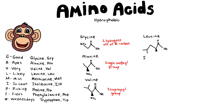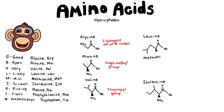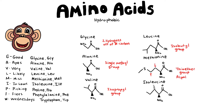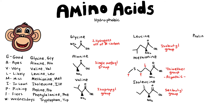Let's look now at the structures of leucine, isoleucine, and methionine. Leucine has an isobutyl group attached to it. Methionine has a thioether group attached to it, and isoleucine has a sec-butyl group attached to it.